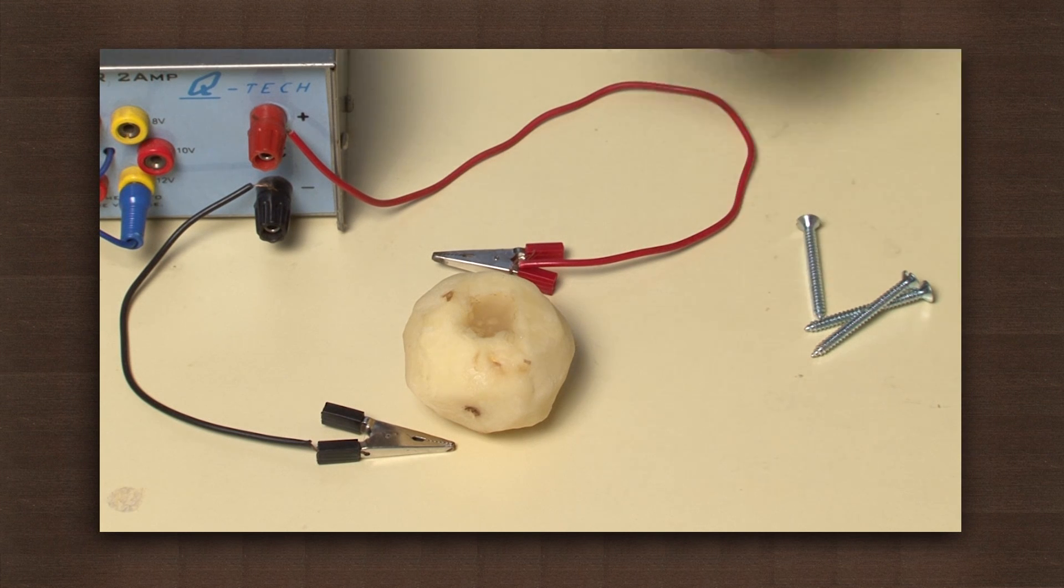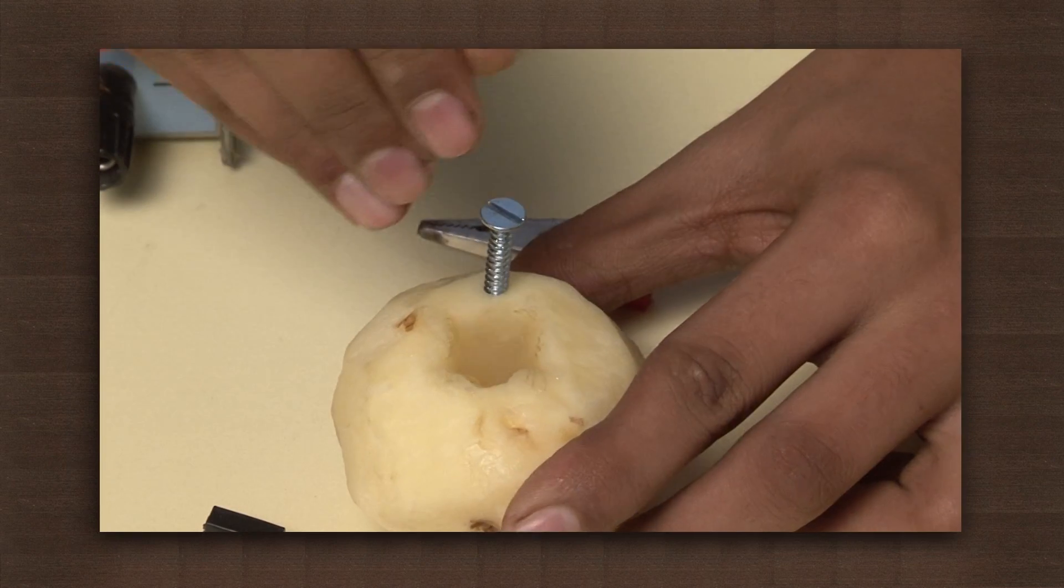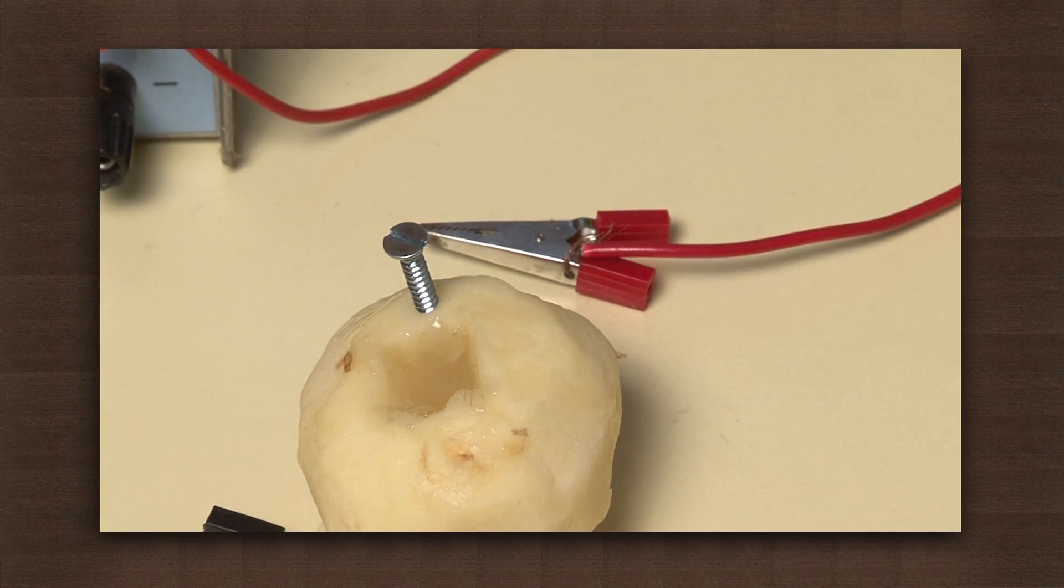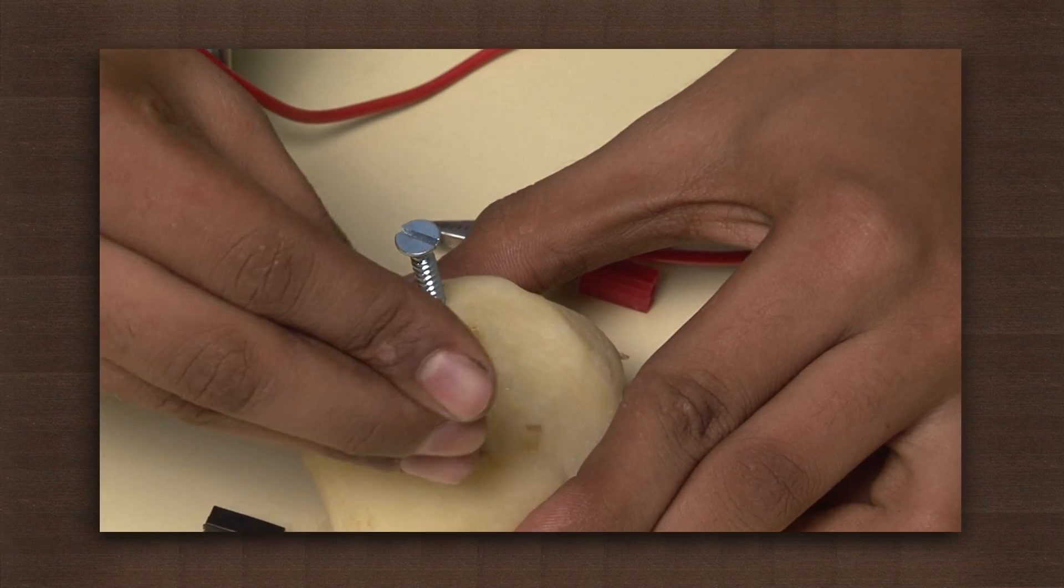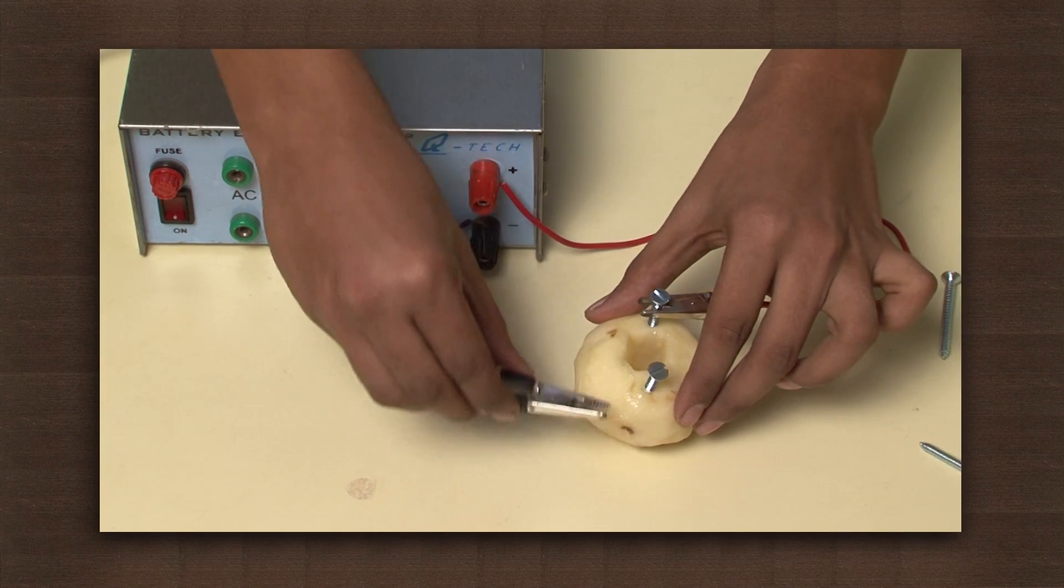Now insert two nails at the sides of this hole. Connect the wires to the nails and start the battery eliminator.